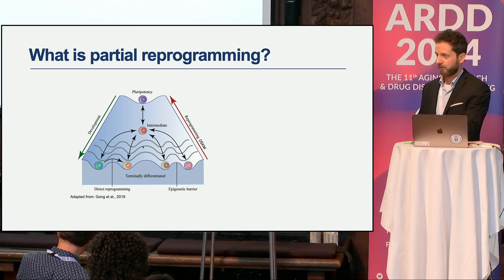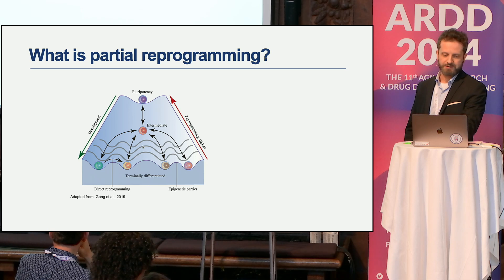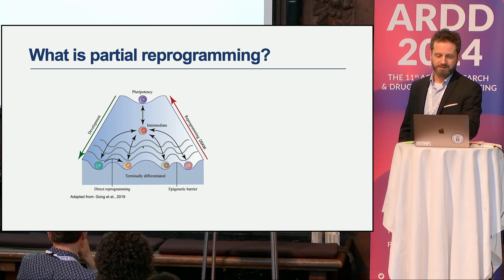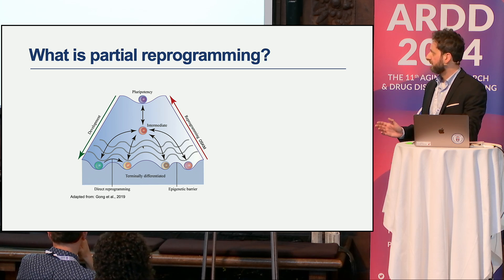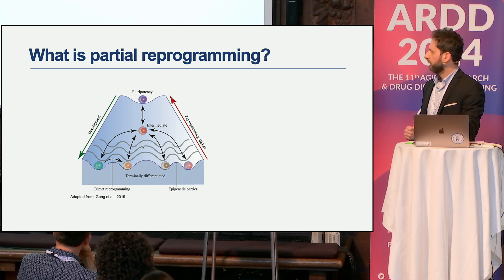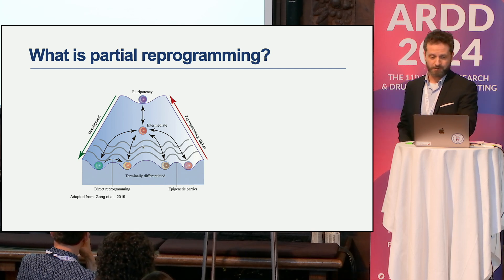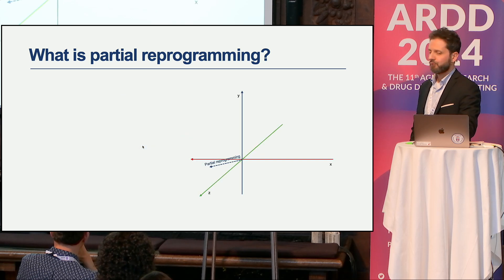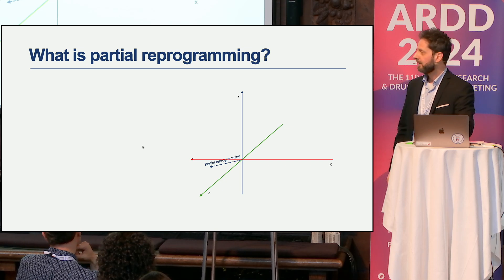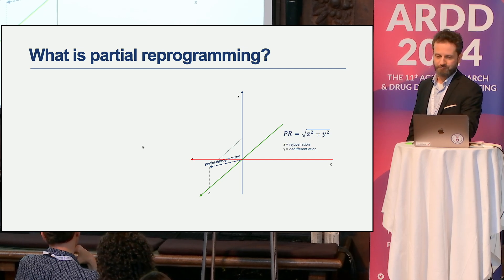A crash course on partial reprogramming: the epigenetic landscape is a space where every cell sits between a pluripotent and a terminally differentiated state. Reprogramming is the process through which a terminally differentiated cell goes back to pluripotency using OSKM, or Yamanaka factors. Partial reprogramming can be conceptualized similarly, but we add an additional aging axis—imagine it extending from the screen toward us—and it is composed of two components: rejuvenation and the retention of differentiation.